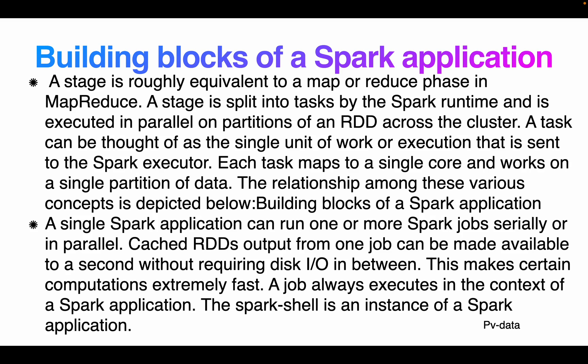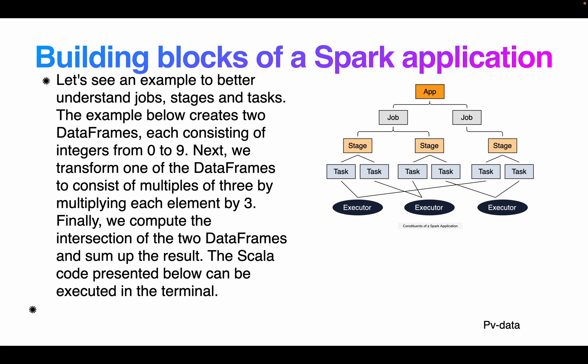A single Spark application can run one or more Spark jobs serially or in parallel. The cached RDD output from one job can be made available for a second job without requiring disk I/O in between, making certain computations extremely fast. A job always executes in the context of a Spark application. A SparkSession is an instance of a Spark application.